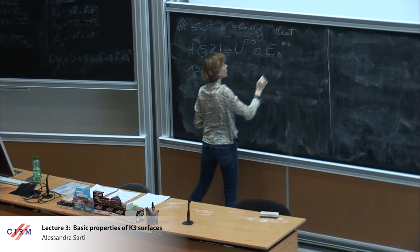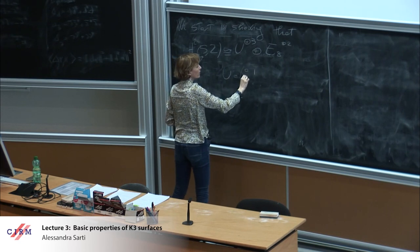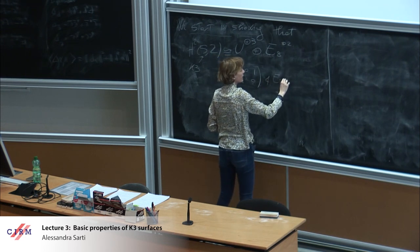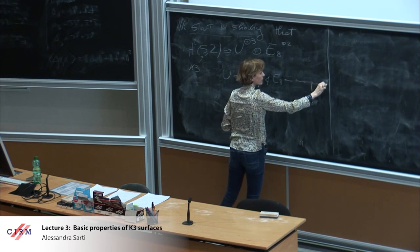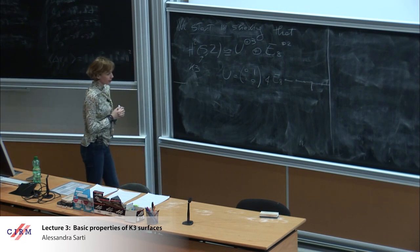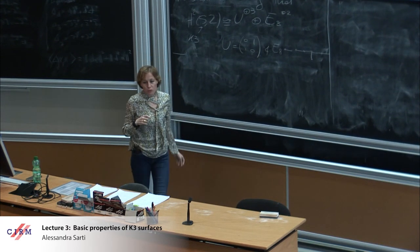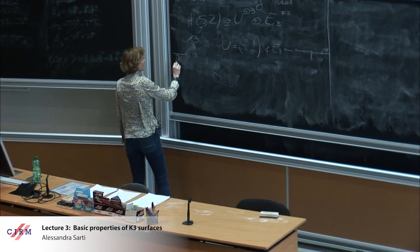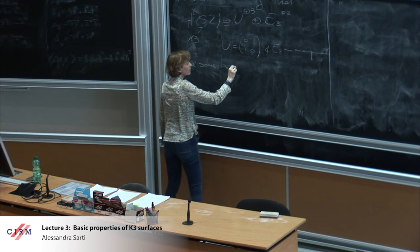U was the parabolic lattice — I'll just write down the form — and E8 is the lattice associated to the Dynkin diagram E8. These were the two lattices, just to recall. So to do that, let's recall some basic facts on lattices.